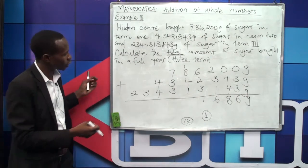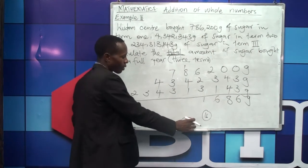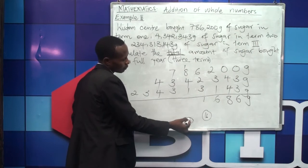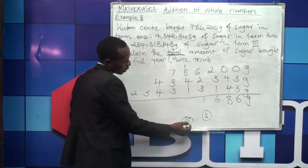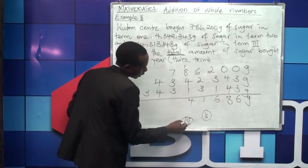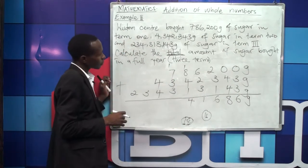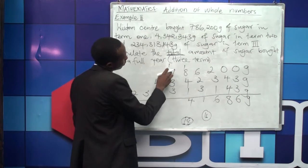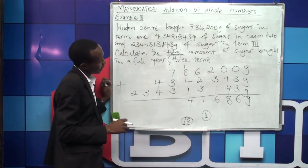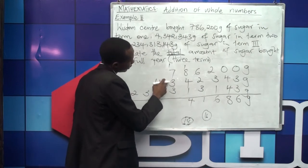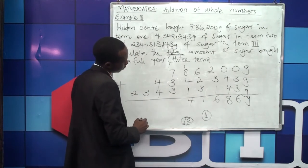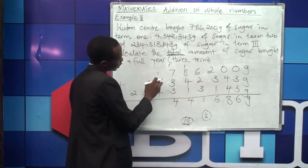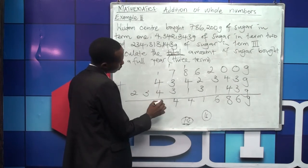The regrouped 1 takes the place of tens. So I write 4 here and regroup 1. Then 1 plus 7 is 8, plus 3 is 11, plus 3 is 14. We write 4 again and regroup 1. Then 1 plus 4 is 5, plus 4 is 9.